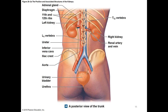Looking at a posterior view through someone's back, you can see the left kidney is slightly higher than the right, with adrenal glands on top of each kidney. The ureters drain down to the bladder and then the urethra. The kidneys are also attached to two very large blood vessels — the aorta and the inferior vena cava — which makes sense given that the kidneys function as blood filtration systems attached to two of the largest blood vessels in the body.